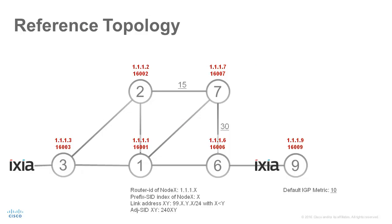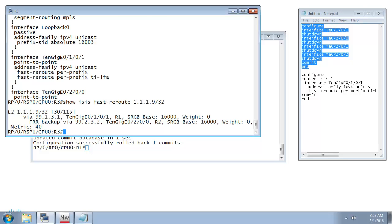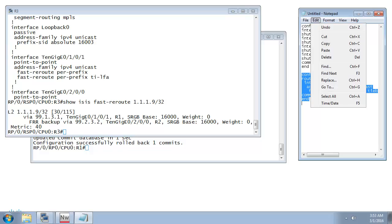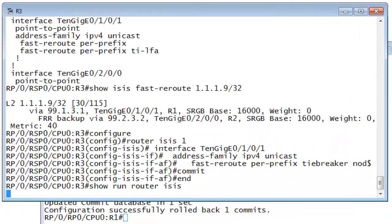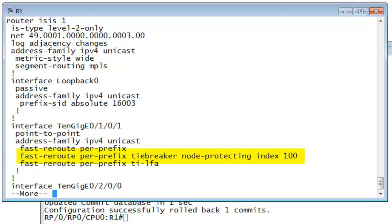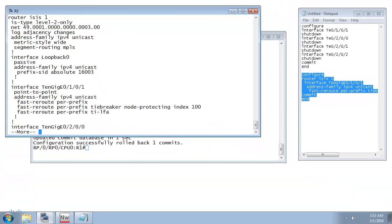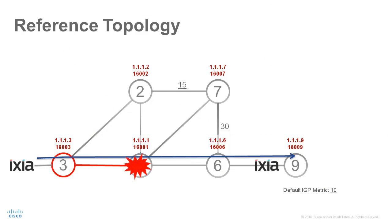Let's go back to node 3 and now enable TI-LFA node protection. It's one additional line of configuration, specifying node protection as a tiebreaker. This can be configured per interface or as a default under the ISIS instance. In this example, we configure it under the interface to node 1. With this configuration, TI-LFA on node 3 will find a node-protecting backup path for each destination. This backup path will follow the post-convergence path — the IGP path to the destination as it would be after the node fails. In this example, the backup path follows the path indicated by the red line.